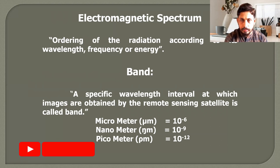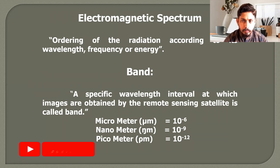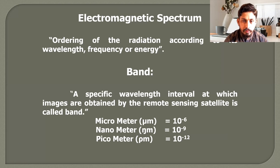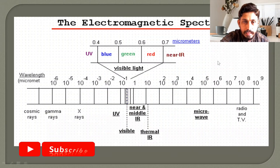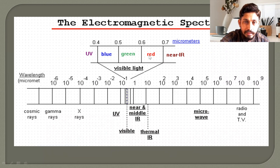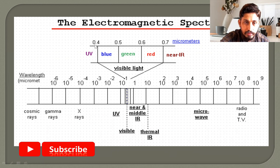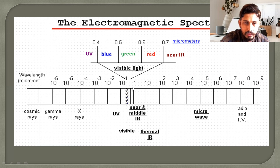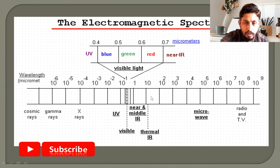For better understanding of the electromagnetic spectrum, we need to know what is meant by a band. A specific equivalent interval at which images are obtained by a remote sensing satellite is called a band. For optical remote sensing, our focus is on the blue, green, and red wavelengths, ranging from 0.4 micrometer to 0.7 micrometer. Sometimes we also use portions nearby that area for optical remote sensing.